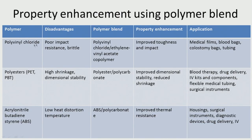Some examples: PVC has poor impact resistance and is brittle. They add ethylene vinyl acetate copolymer to improve toughness and impact resistance, giving it some flexibility. That is why PVC blended with EVA is used in medical films, blood bags, tubing, and films. Polyesters shrink and have problems maintaining dimensions. Adding polycarbonate gives good stability and reduces shrinkage; it is used in blood therapy, drug delivery, intravenous kits, flexible medical tubing, and surgical instruments, because polycarbonate is a very tough engineering plastic.